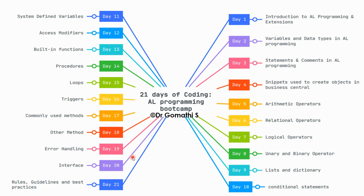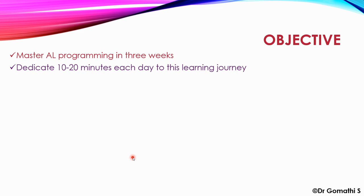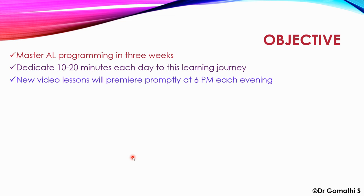Whether you are new to AL programming or you already know some basics but want to improve yourself, this boot camp will be useful for you. The objectives are: first, mastering AL programming in three weeks — you will be learning from basics toward the intermediate level. Second, dedicate 10 to 20 minutes each day to this learning journey. New video lessons will premiere at 6 PM each evening, from today for the next 20 days.